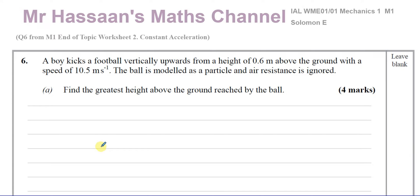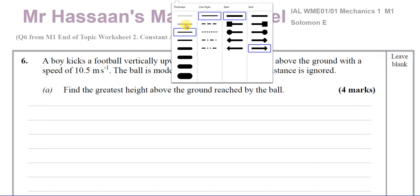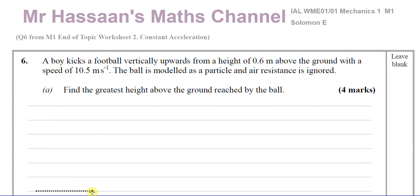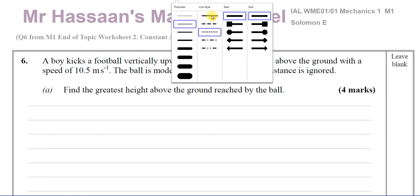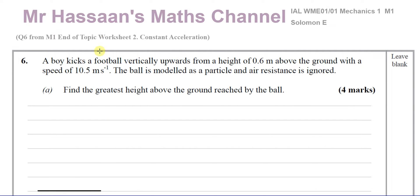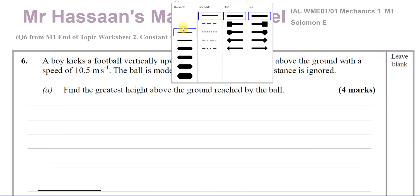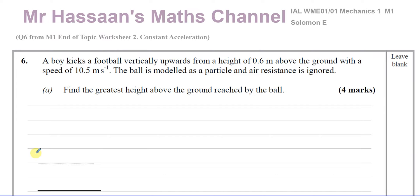In these types of questions, it's very important to get all your ideas sorted out clearly — which direction you're going to take as positive. So here, let's say this is the ground level. The ball is not kicked from the ground; it's kicked from 0.6 meters above the ground. So this is 0.6 meters. This is the level from which the ball is kicked — I'm going to call that O. That's always the starting point.